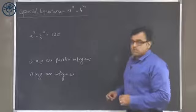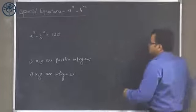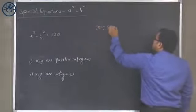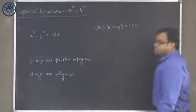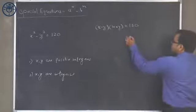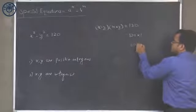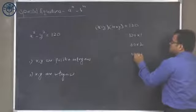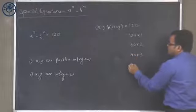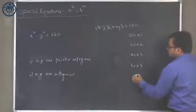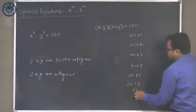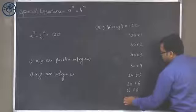In order to approach this question, x squared minus y squared equals 120. We can write x minus y times x plus y equals 120. Now 120 can be written as 120×1, or 60×2, or 40×3, or 30×4, or 24×5, or 6×20, or 8×15, or 10×12.